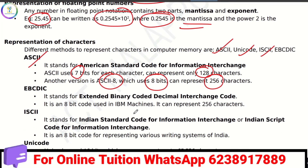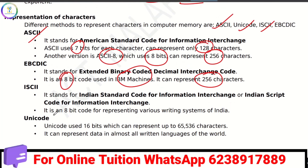EBCDIC stands for Extended Binary Coded Decimal Interchange Code — an 8-bit code for IBM machines supporting 256 characters. ISCII is the Indian Standard Code for Information Interchange, an 8-bit code for different writing systems. Unicode is 16-bit and supports 65,536 characters.